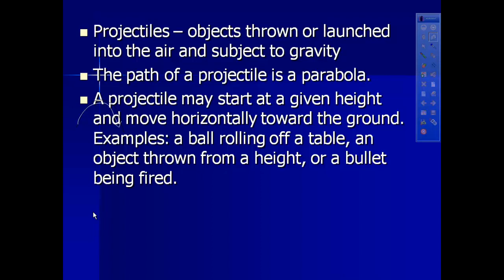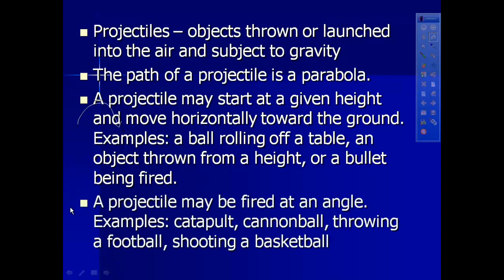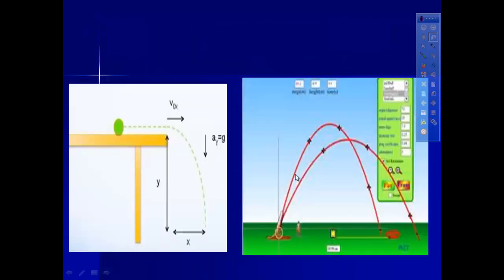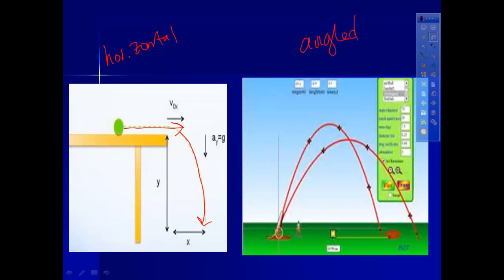Some examples of horizontal projectiles would be a ball rolling off a table, or a bullet being fired from a gun. The more classic example of a projectile are things like catapults, cannonballs, throwing a football, or shooting a basketball - all of those are what we call angled projectiles. A horizontal projectile is an object that is initially traveling horizontally and then, because of gravity, starts to fall downward. An angled projectile is launched at some angle to the ground, and we'll do those next week.